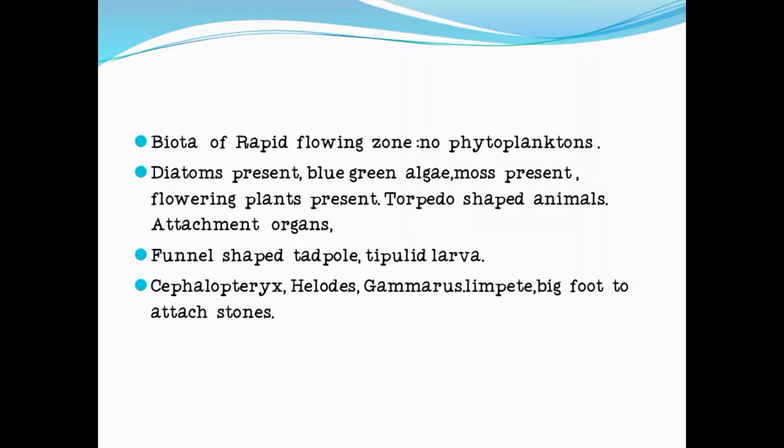The biota of the rapid flowing zone contains no phytoplankton — phytoplankton are absent. Diatoms are present. Blue-green algae is present. Moss is present because humidity is present. Flowering plants are also present.